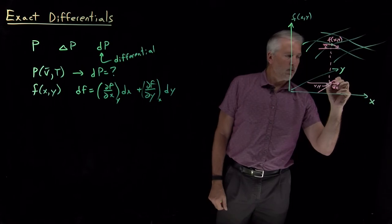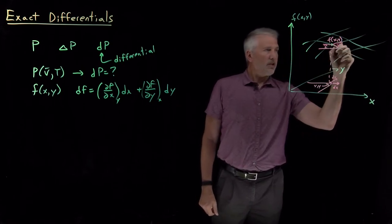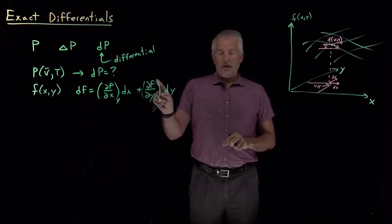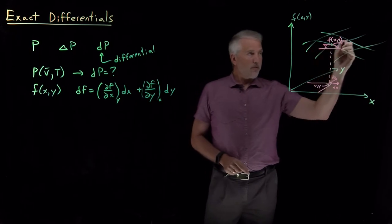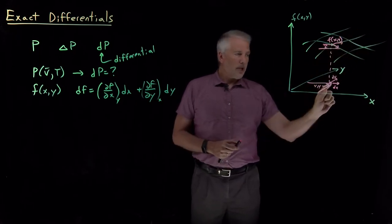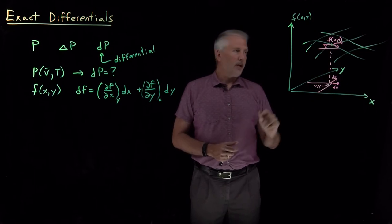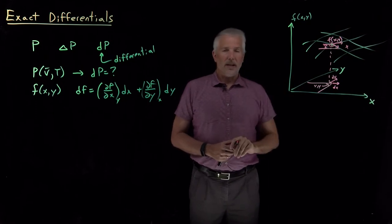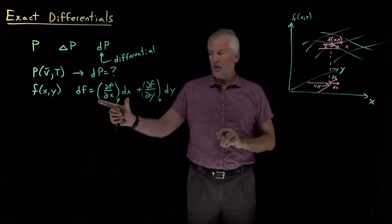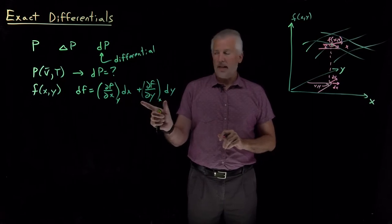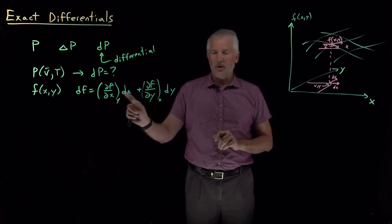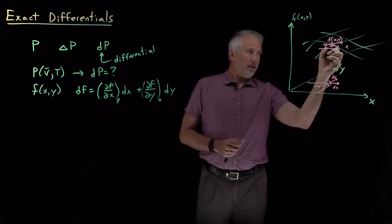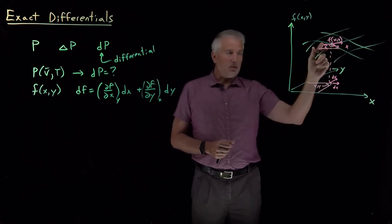The second term is similar: if we shift the point only in y, that's like moving along a contour, and the amount by which the function changes is the rate of change in the y direction — the slope along one of these contours — multiplied by how far we've moved in that y direction.